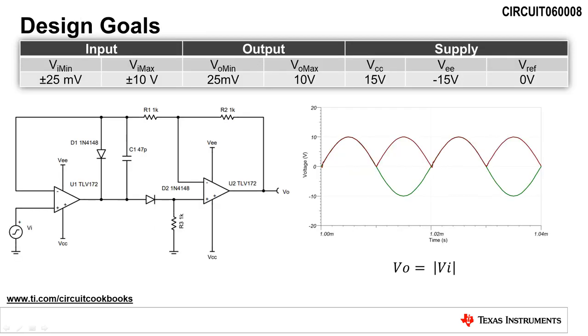The design goal of this circuit is to rectify an AC input signal that ranges from plus minus 25 millivolts to plus minus 10 volts and produce an output voltage that is always positive, ranging from 25 millivolts to 10 volts.